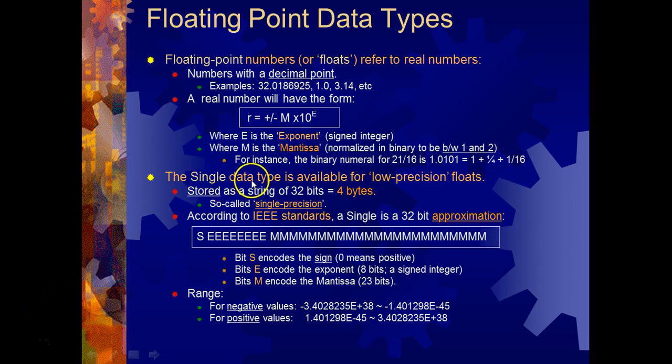We also have a single data type which doesn't reserve as much memory, so it only needs 32 bits or 4 bytes for single precision. It has a range from here to here if it's negative, and positive from here to here.